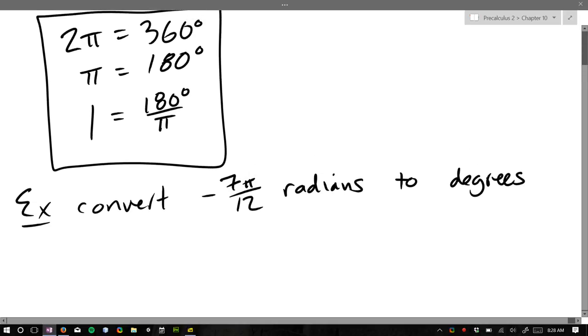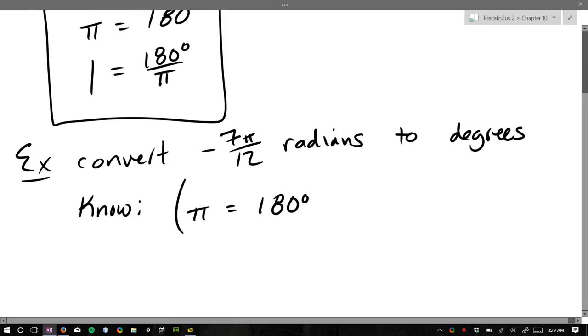All right, so radians to degrees. Where should I start? I like pi equals 180, let's start up there. So we know, this is the middle one, pi equals 180. We're beginning there. Pi radians equals 180 degrees. And what do I need to multiply this equation by?